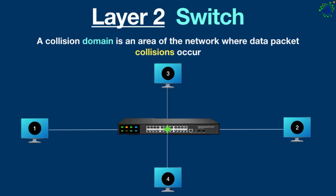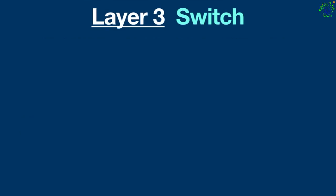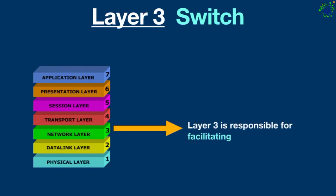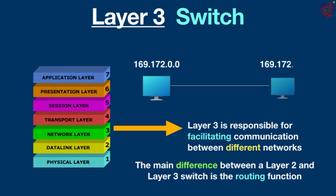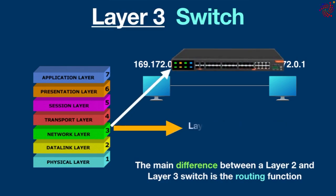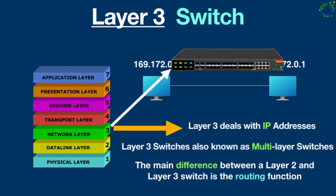Now, what is a layer 3 switch? Layer 3 is the third layer of the OSI model, responsible for facilitating communication between different networks. The main difference between a layer 2 and layer 3 switch is the routing function. Each device has a unique IP address that identifies it within its network. A layer 3 switch operates at the OSI model's network layer, processing and transmitting data packets based on IP addresses. Layer 3 switches are also known as multi-layer switches — they perform all the functionalities of a layer 2 switch along with static and dynamic routing, meaning they can operate on both layer 2 and layer 3 and forward data based on both IP addresses and MAC addresses.